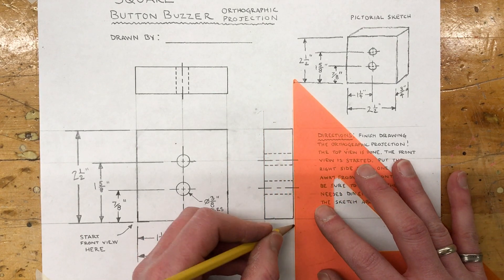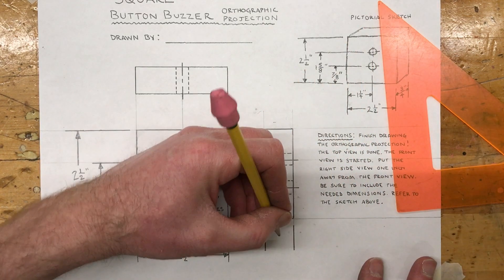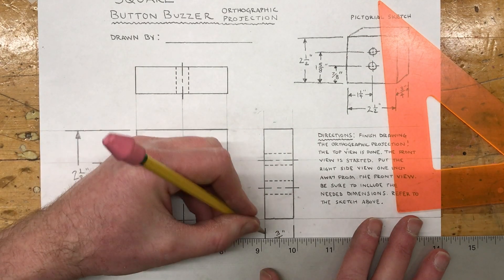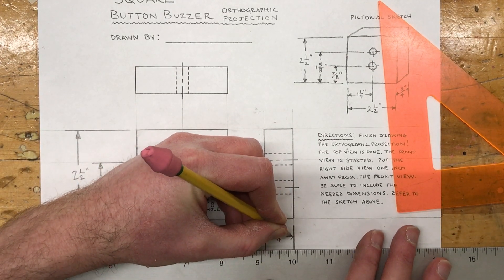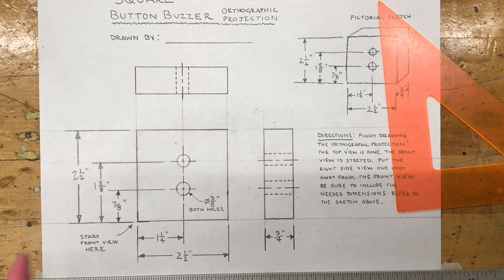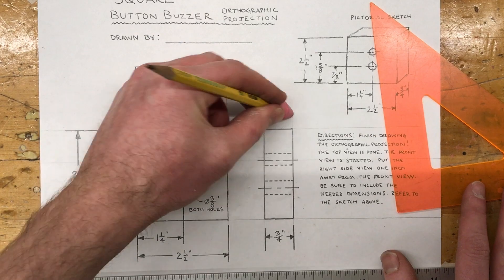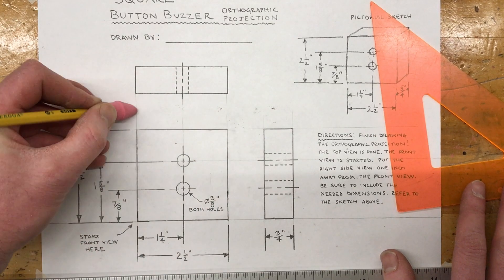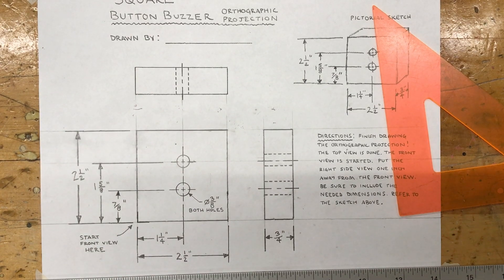And then I could just erase these light lines, maybe use an eraser shield, but then I would be all done. Thanks for watching.